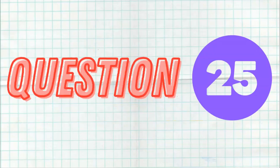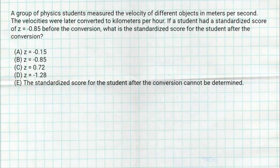Question 25: this is a pretty easy problem as long as you understand Z-scores. Z-scores measure how far data is from the mean. It doesn't matter if you change your units — the individual values in your data set will change by that conversion, but if a student's particular score is negative 0.85, that means they are 0.85 standard deviations below the mean. Change the units all you want and they are still in that exact same position.